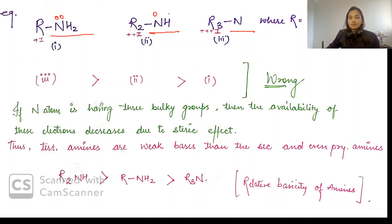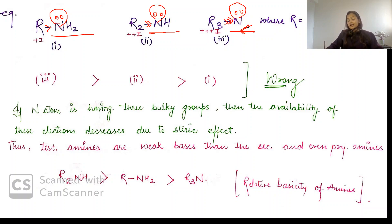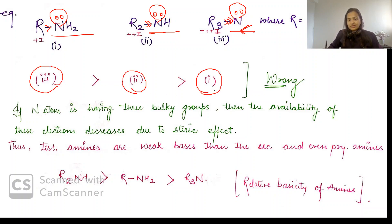Nitrogen must have a lone pair to be basic. Now, if nitrogen has more alkyl groups, more electron density increases and it should be more basic. With one alkyl group you have primary amine, two alkyl groups secondary amine, three alkyl groups tertiary amine. So you'd expect tertiary amine to be most basic.